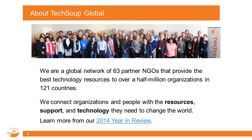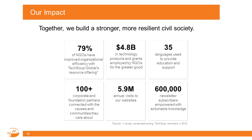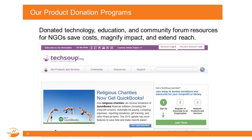TechSoup is a global network of 63 partner NGOs working in 121 countries worldwide to provide nonprofits and libraries with resources, knowledge, and technology to help meet their mission and change the world. We are serving over 615,000 NGOs, delivering more than $4.8 billion in technology products and donations to the NGO sector — largely through donation partners like Microsoft. You can find out more about our donation programs at TechSoup.org.